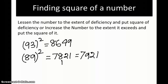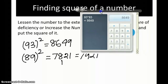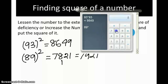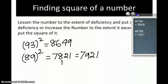Let's check the answer: 89 into 89 gives 7921. That's all.